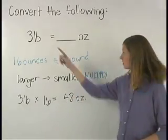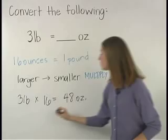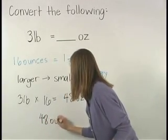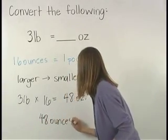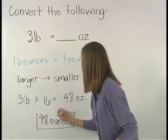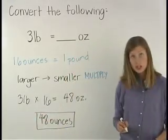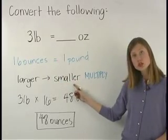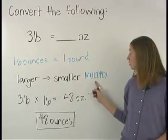This means that three pounds is equal to 48 ounces. Don't forget that when we go from a larger unit to a smaller unit, we multiply.